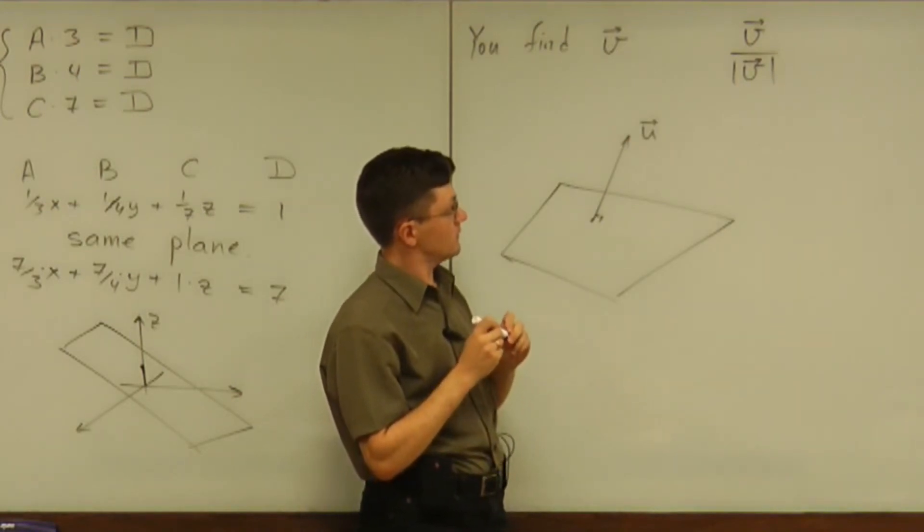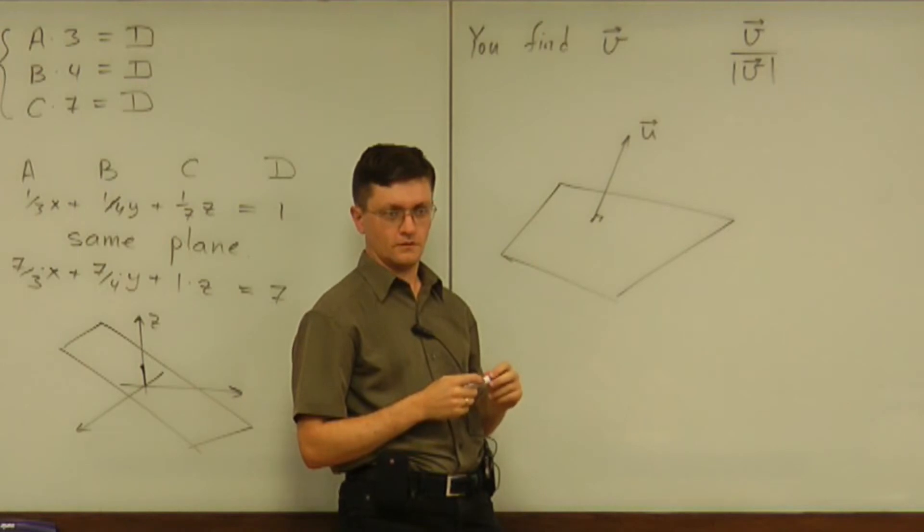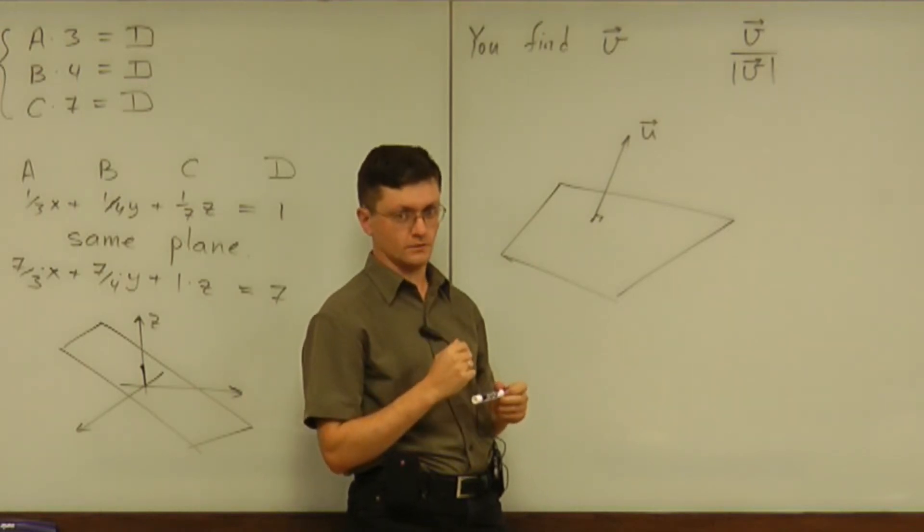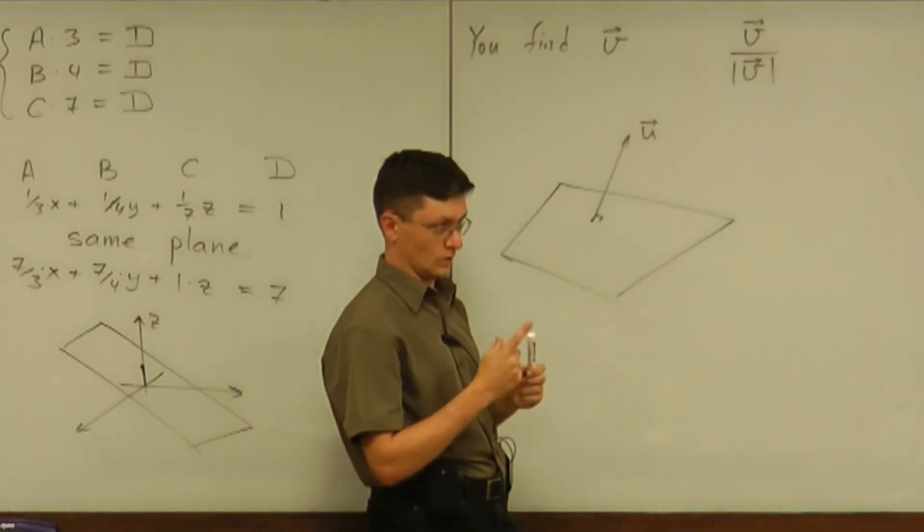Now, how many unit vectors are there perpendicular to this plane? Is there only one unit vector perpendicular to the plane? Infinitely many? Unit means magnitude one, right?